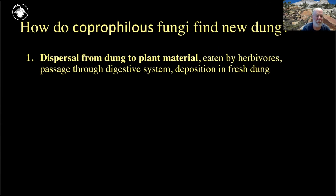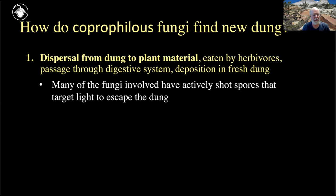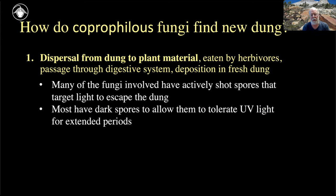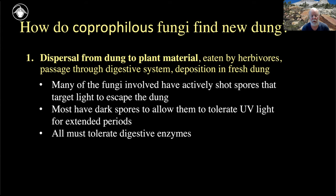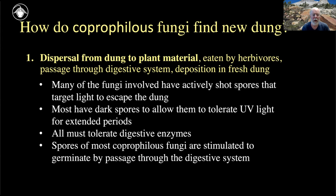So to summarize what I just showed you: coprophilous fungi find new dung by firing spores toward light, sticking on foliage, and waiting to be ingested. Most have dark spores, so they're tolerant of UV light and can sit on foliage for a long time. They all have to be tolerant of digestive enzymes — if they're going to pass through the animal gut, they can't be digested by it. Many are stimulated to germinate by passage through the gut, and almost all early-arriving ones have already germinated by the time the dung is deposited, gaining the advantage of speed by taking cues from the digestive system.